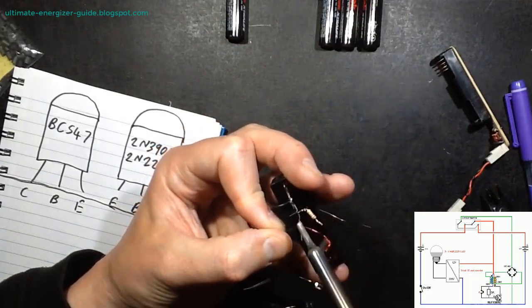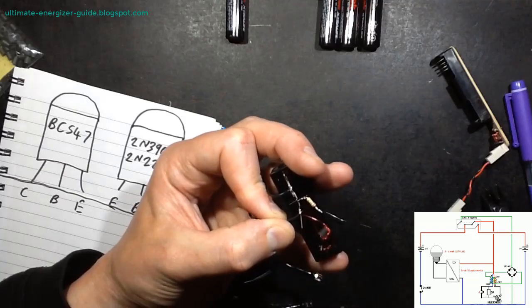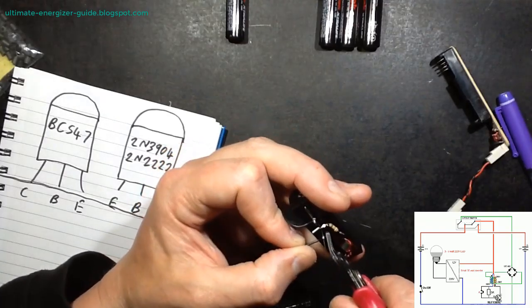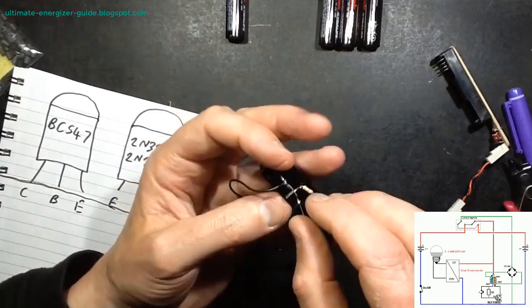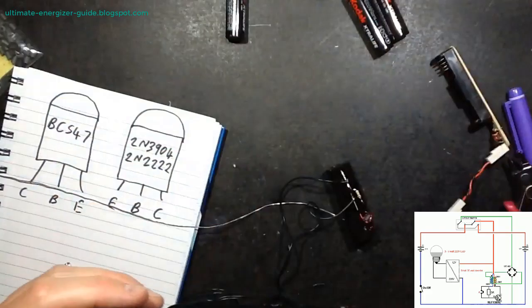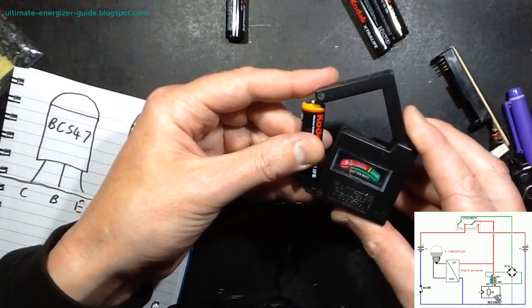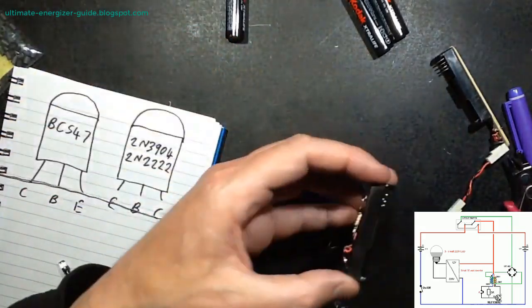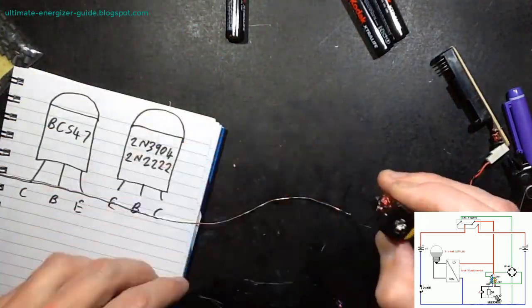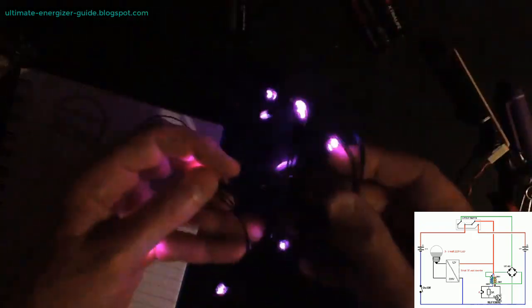Creating a sustainable power source for the home: adapting the Joule Thief circuit for larger applications like powering a home is ambitious yet achievable with the right knowledge and creativity. Imagine a system that could take a small amount of input energy and continuously generate sufficient power to sustain household appliances. The Ultimate Energizer guide provides detailed plans for building this type of energy system, combining the fundamentals of the Joule Thief circuit with improved configurations for high power output.